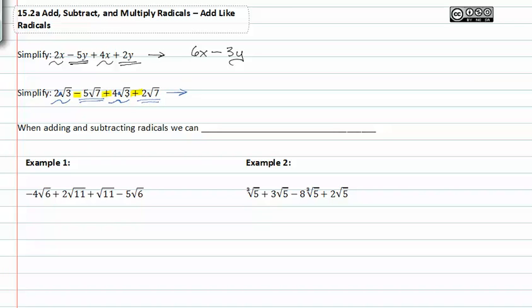2 plus 4 is 6 root 3, and negative 5 plus 2 is negative 3 root 7. Notice how they're similar to the original example that I showed you, but now we're talking about radicals instead of x's and y's.